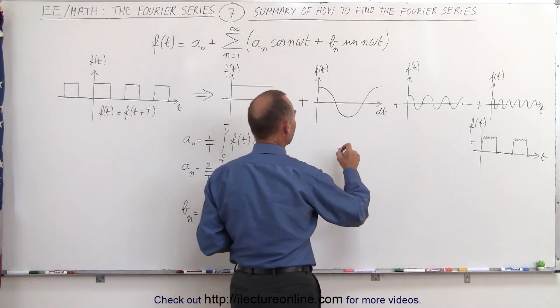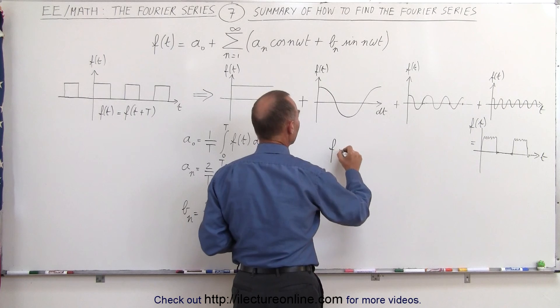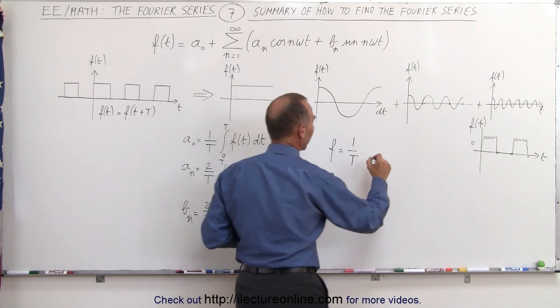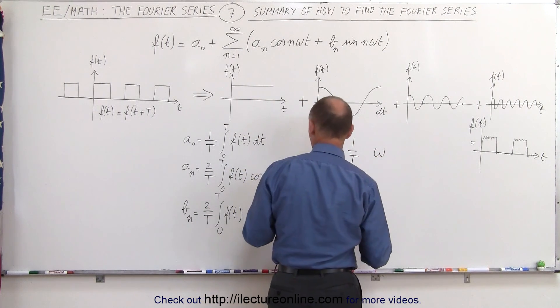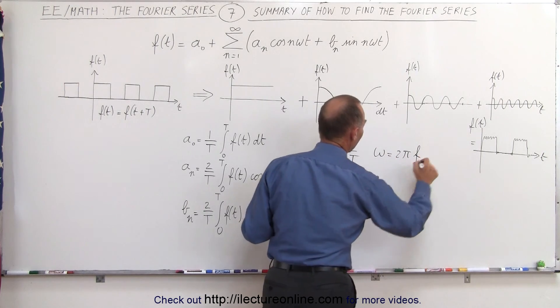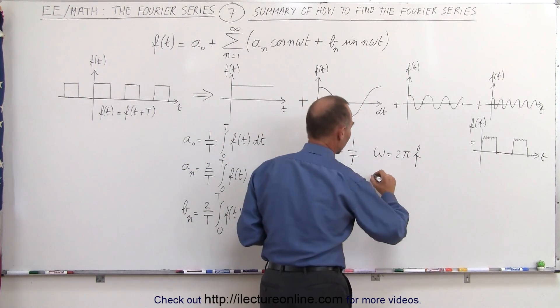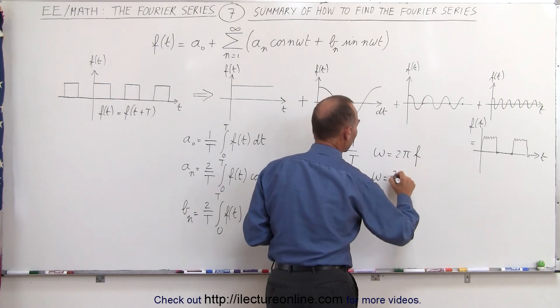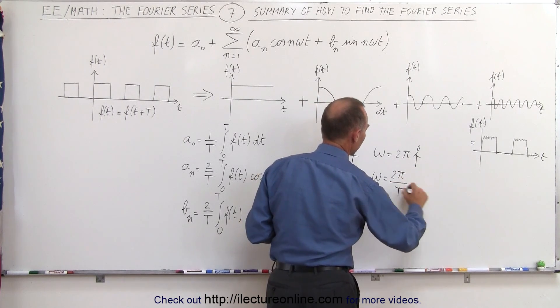Remember that we know the frequency is equal to 1 over the period and that the angular frequency omega is equal to 2 pi f, and since f is 1 over the period, we can say that omega can be written as 2 pi over the period.